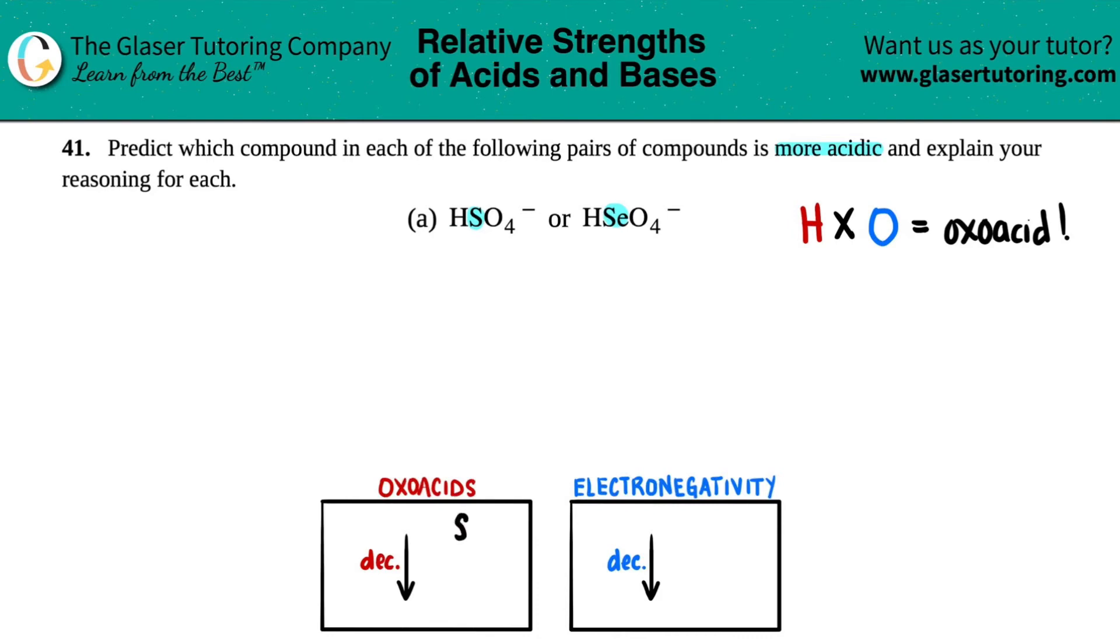As we go down, we decrease in acidity. So which one would be more acidic? Well, selenium would be least acidic because we're going down, so the sulfur one has to be more acidic. In this case, HSO4 minus is the more acidic acid out of the two. Now we just have to explain the reasoning.